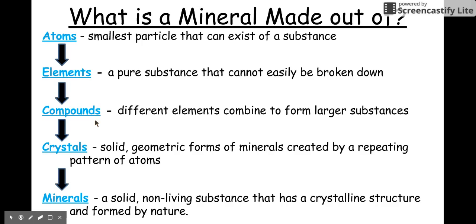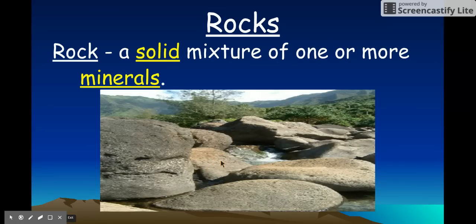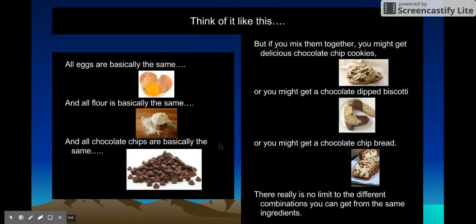For minerals the recipe is very specific, but for rocks the recipe can vary a little bit. A rock is a solid mixture of one or more minerals. You can have a little bit of this mineral and a little bit of that mineral to make a rock — it doesn't have to be the exact same amount each time. Think of it like this: all eggs are the same, all flour is the same, and all chocolate chips are the same, but you can combine them in practically an infinite number of ways. You can make chocolate chip cookies, chocolate chip biscotti, chocolate chip bread — a million different things from those same three ingredients.